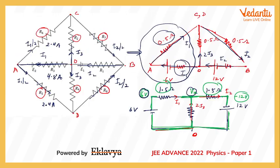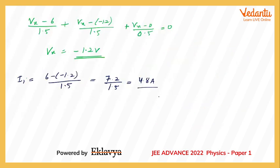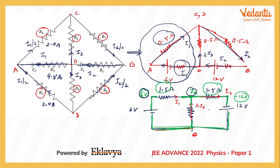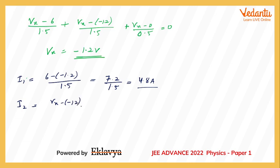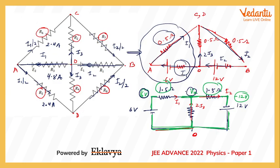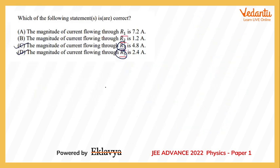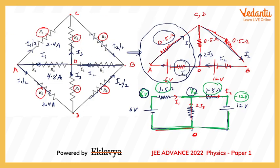R1 corresponds to the current i2. Calculating: i2 = (Vx − (−12)) / 1.5 = (−1.2 + 12) / 1.5 = 10.8 / 1.5 = 7.2 amperes. Current through R7 and R8 would each be 3.6 A, but the option mentions R1 = 7.2 A, which is confirmed correct.